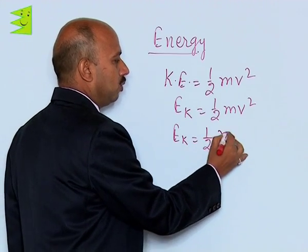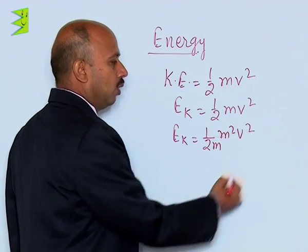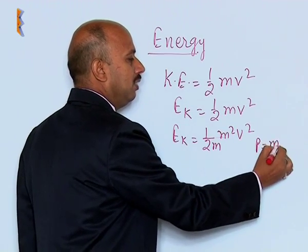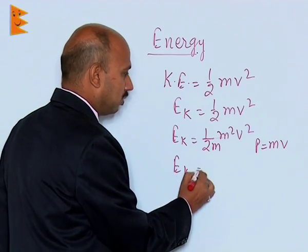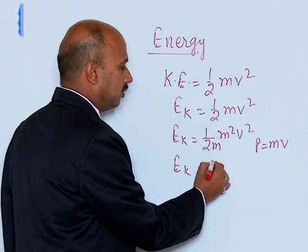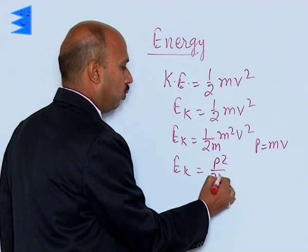That will be here 2m into m square v square. We know the linear momentum p is equal to m into v. So we can write Ek is equal to here, this is p square upon 2m.